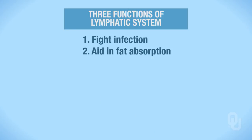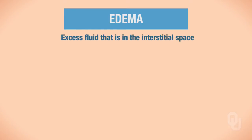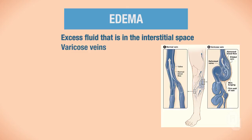The third function of the lymphatic system is for fluid balance. Remember, homeostasis is the word. If the body cannot properly maintain fluid balance, you have edema. Edema is the excess fluid that is in the interstitial space. There are lots of things that can cause this. You might have varicose veins, for example. If you have varicose veins, then you can have incompetent venous valves, so the venous valves don't function very well, and ultimately that can lead to edema.